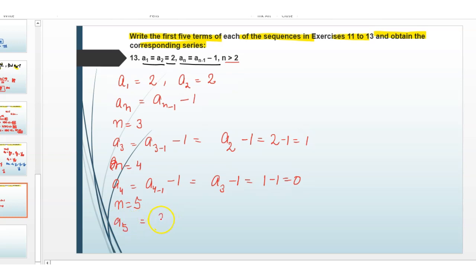Next we have to find a5. Then a5 equals a(5-1) minus 1, which equals a4 minus 1, which equals 0 minus 1 equals minus 1.